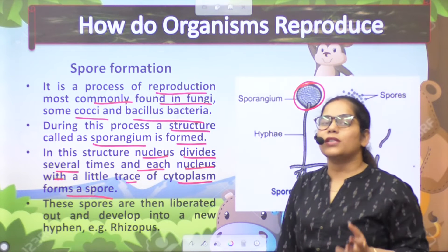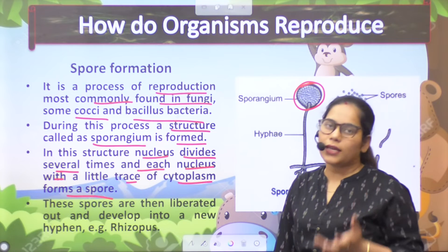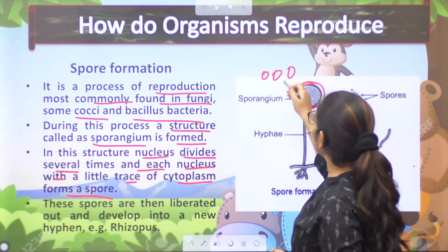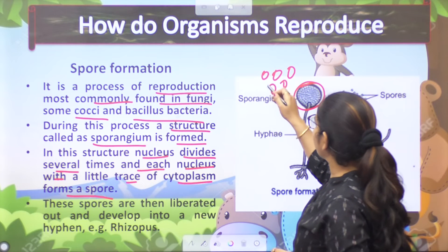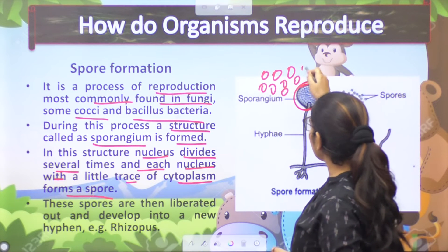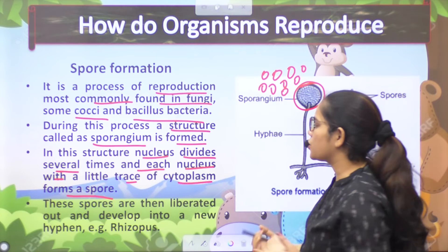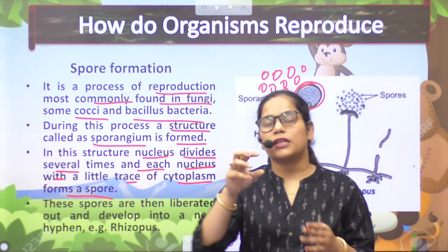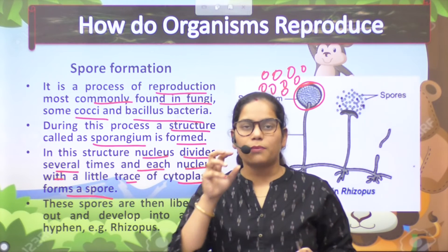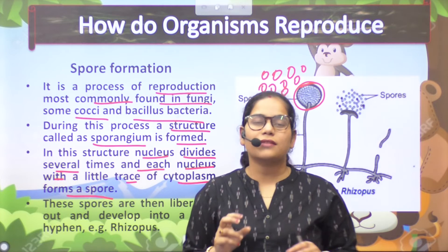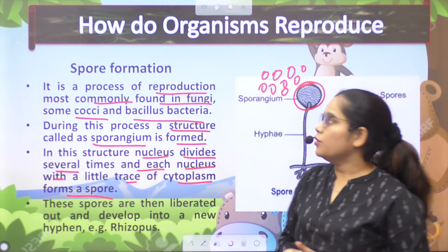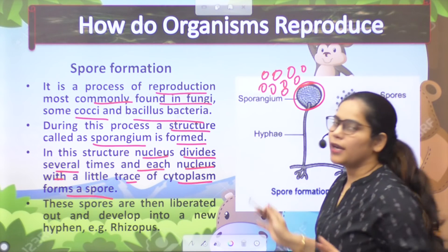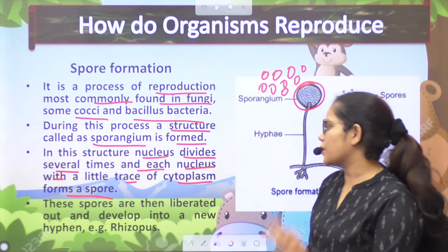First, the nucleus divides, then the cell divides. First of all, the nucleus undergoes division and forms a new formation. Then the nucleus is separated by a little bit of cytoplasm. The cell has a liquid-like structure known as cytoplasm. So from the cytoplasm, they form different spores.